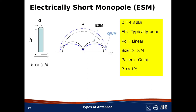A monopole is essentially a dipole in which one arm has been replaced by a perfectly conducting ground screen. Ideally this ground screen is infinite. No power is radiated below the ground screen; above it, you get the same pattern the dipole would have produced. This causes the directivity to go up by a factor of 2, which is 3 dB. So the electrically short monopole has a directivity of 1.8 dBi plus 3 dB, for a total of 4.8 dBi.